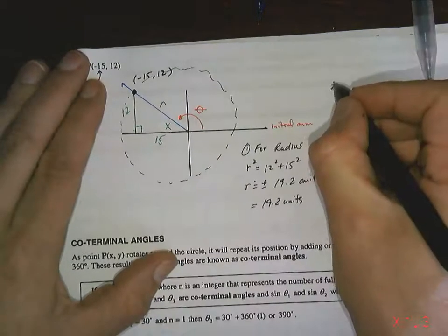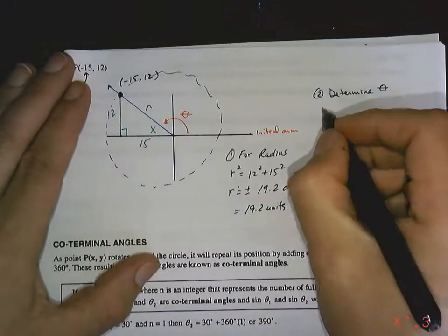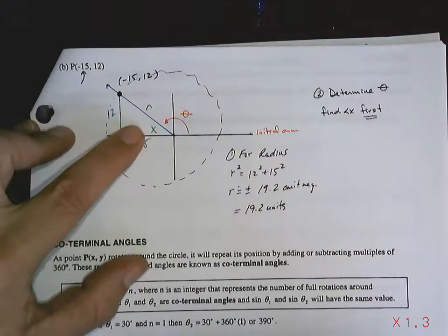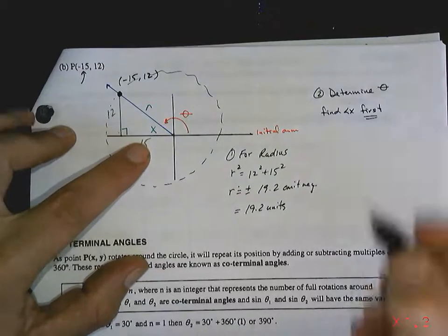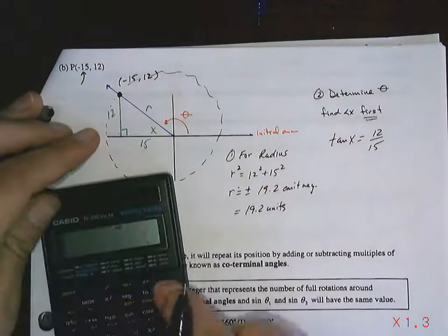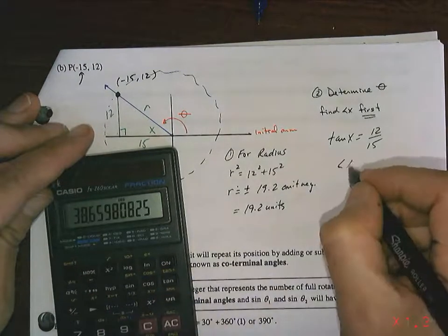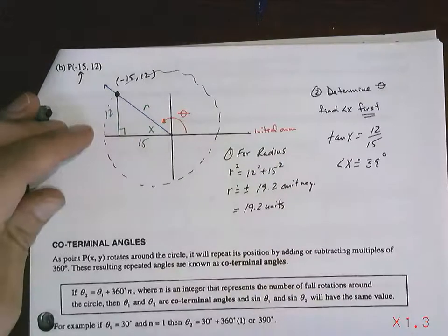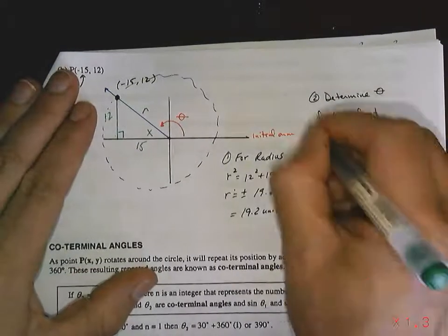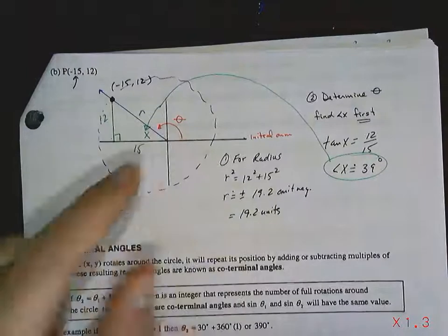So step two, determine theta. Well to do that you have to find x first. So angle x, I'm going to use opposite and adjacent, I'm going to use tangent. I'm going to use my calculator. I'm going to do 12 divided by 15, and then I'm going to do second function tangent, which is going to give me approximately 39 degrees. But that is here. This is here. That's not what I want. I want this.